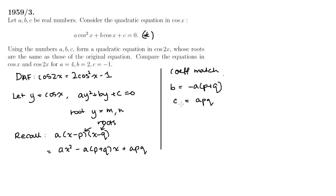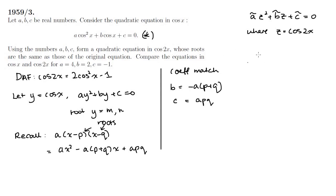What we want is an equation of the form Ã z squared plus B̃ z plus C̃ equals 0, where z equals cos 2x. The condition is that the roots must be the same as the roots of the original equation. Recalling that cos 2x equals 2 cos squared x minus 1, and the roots cos x are M and N, the two z values, z1 and z2, would be 2m squared minus 1 and 2n squared minus 1.